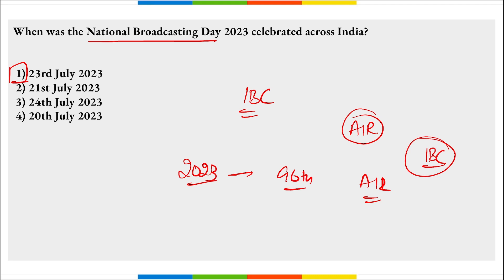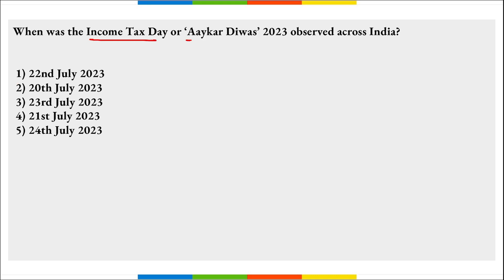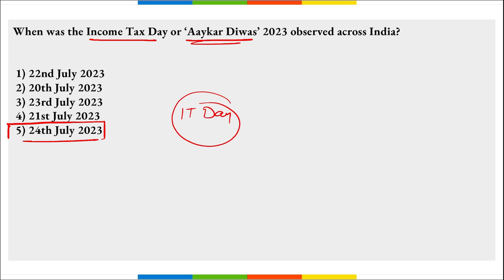When was Income Tax Day or Aaykar Divas observed? On 24th of July 2023, Income Tax Day is observed to commemorate the introduction of income tax in India in 1860. On 24th July 2023, it marked the 164th anniversary of Income Tax Day.